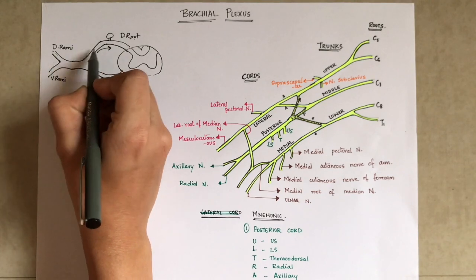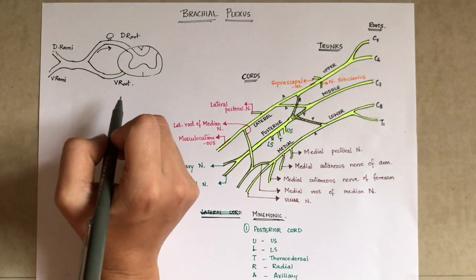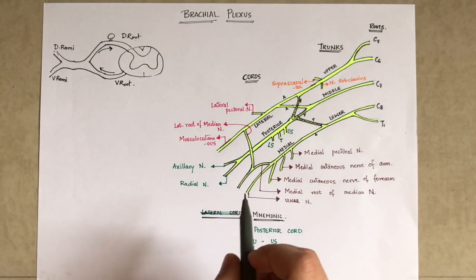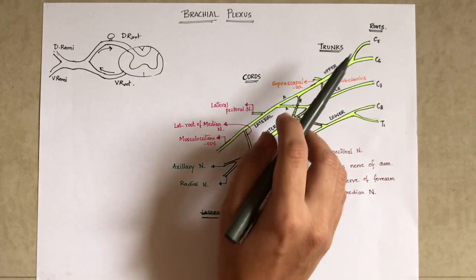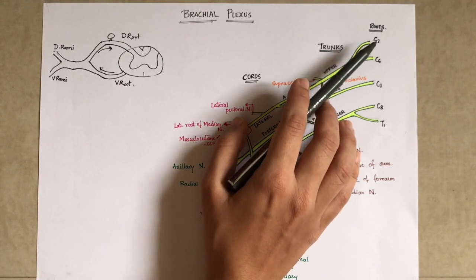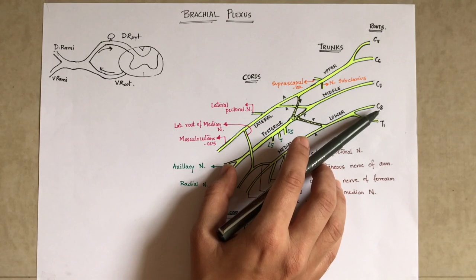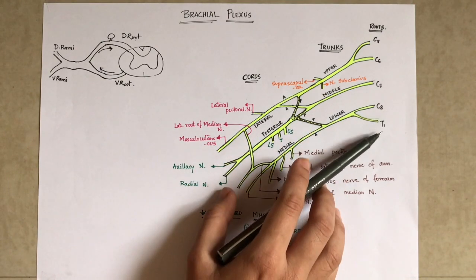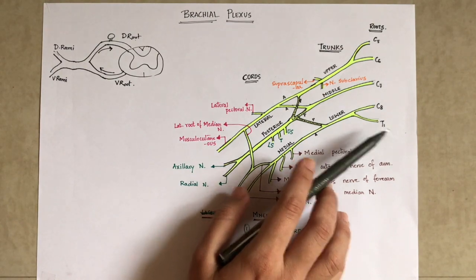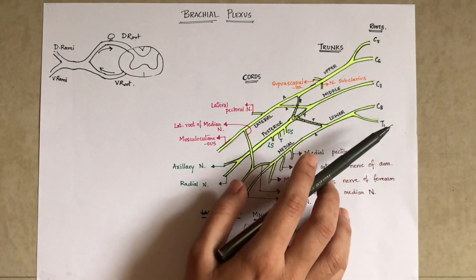The ventral root has motor fibers which are carried away from the CNS. The dorsal root always has sensory fibers which carry impulses from the peripheral region towards the CNS. Now let's get back to the formation of the brachial plexus — it is formed from the ventral primary rami of the fifth, sixth, seventh, eighth cervical spinal nerves and the ventral primary rami of the first thoracic spinal nerve. All of these form the roots of the brachial plexus.